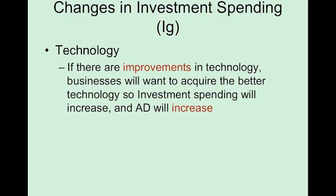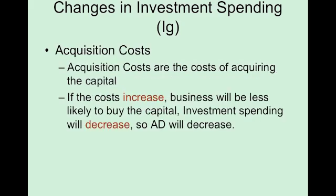Technology usually just works in one direction — we don't talk about technological declines. Acquisition costs are the cost of acquiring the capital. If the cost of getting that capital, like a machine — including getting it to your factory — if that increases, then you are less likely to go purchase that capital, and so investment spending would decrease. Higher acquisition costs means businesses are less likely to purchase that stuff, and therefore investment spending would decrease, and therefore aggregate demand would decrease.